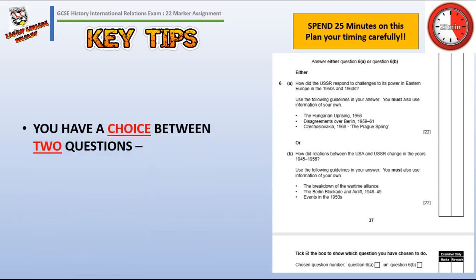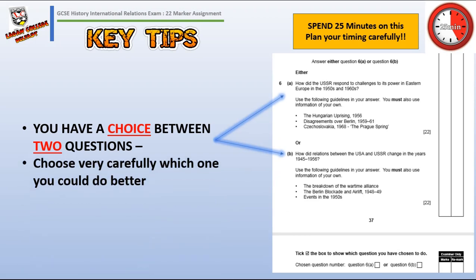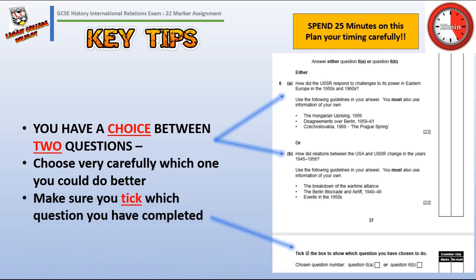On the paper itself, you actually have a choice between two different questions. Have a good look through and make sure you choose the right one for you. Spend at least a minute just making sure you choose the right selection first — you don't want to be halfway into a question and realise you should have done the other one. At the very bottom, always make sure you tick which question you've done, and that'll help the examiners as well.